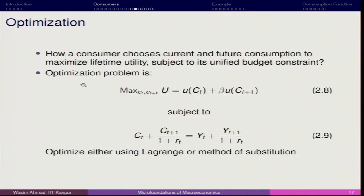Now we can go for the optimization condition. In the two-period model, the optimization condition has a lot of meaning — it decides in what situations this representative consumer is indifferent about current and future period consumption. We maximize Ct, Ct+1: U(Ct) plus beta times U(Ct+1), subject to the budget constraint Ct plus Ct+1 upon 1 plus Rt equals Yt plus Yt+1 upon 1 plus Rt. You can use either the Lagrange multiplier method or the method of substitution — solving for Ct+1 and then substituting, then going for direct differentiation.